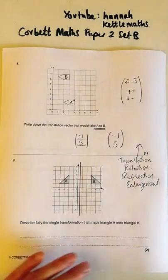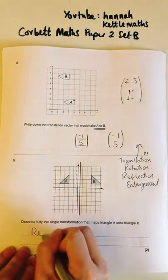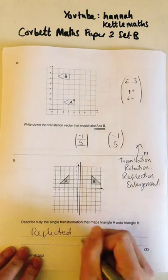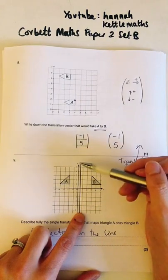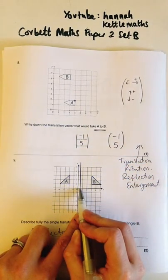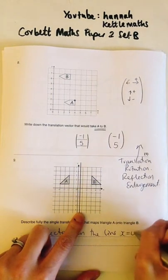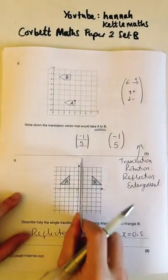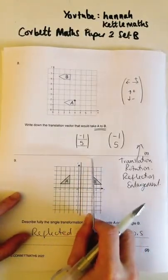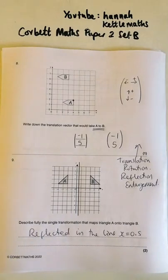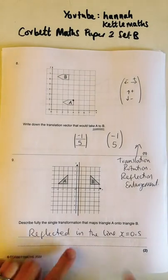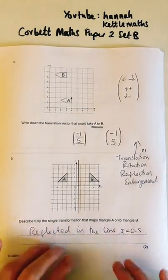It's been reflected — that's one mark. Then we need to state what the line is. That line goes through 0.5 on the x-axis, so it's x equals 0.5. Any vertical line is x equals something; any horizontal line is y equals something. So x = 0.5 gives both marks.